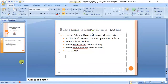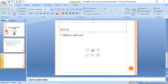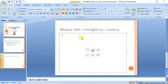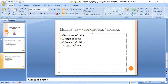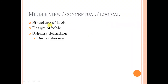Now coming to the second level: the conceptual level, logical level, or middle level. You can call it the middle view, conceptual view, or logical view. At this level you can see the structure of the table — also called the design of the table or schema definition. An example of this is the 'DESCRIBE table' command. So the middle or conceptual view is simply the structure, design, or schema of the table.